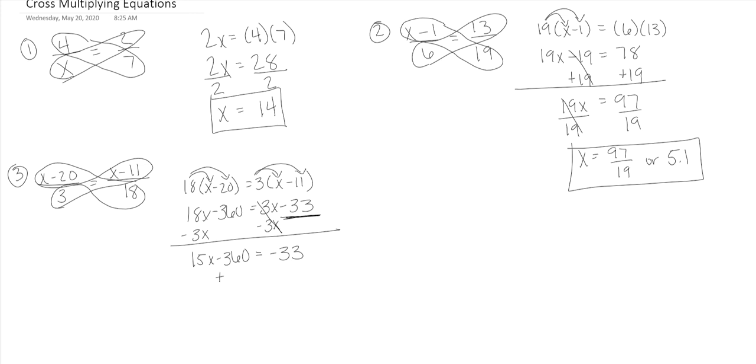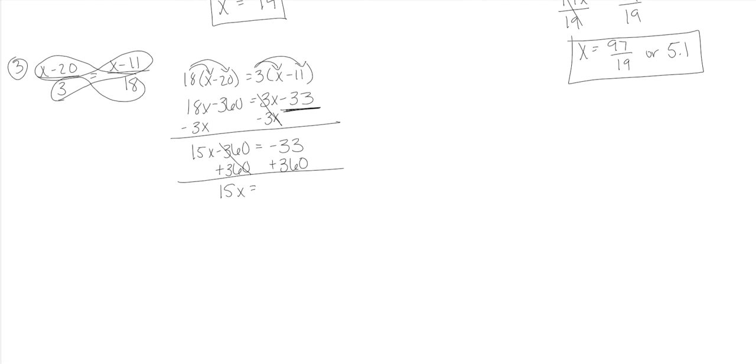Add 360 to both sides so that we cancel those away from the X. 15X is equal to 327. Divide both sides by 15. And if you're in pre-AP and you want to leave it into a fraction you can reduce this. Three will go into both the top and the bottom. So that would be 109 over 5. Or if you're in level you'll have calculators and you can divide it which would give you about 21.8.